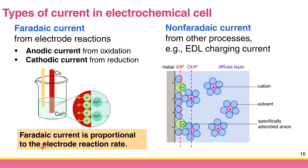The name Faradaic comes from the fact that this Faradaic current is proportional to the electrode reaction rate. It is called Faradaic current because the amount of charge or current belongs to Faraday's law of electrolysis. So these are the two types of current.